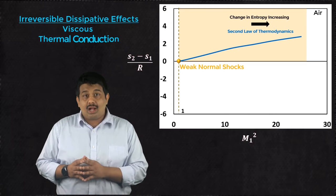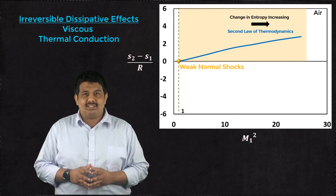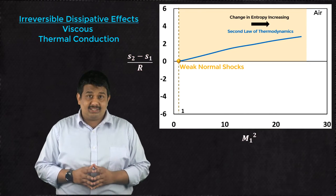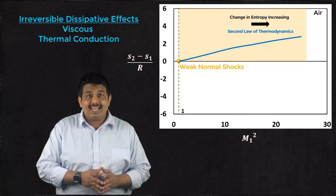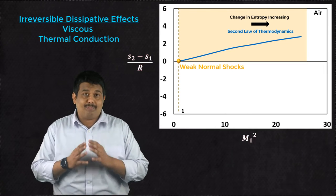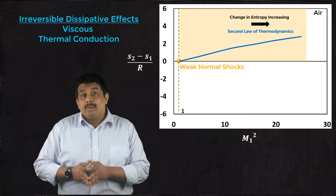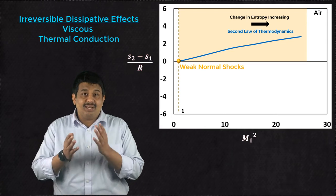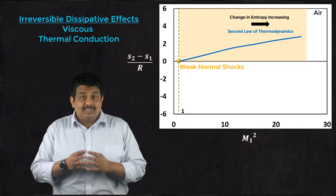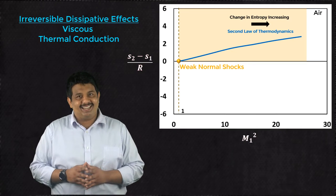Recall that shock occurs over a small distance and across this distance, the effects of fluid viscosity and thermal conduction are important. Because of these irreversible dissipative phenomena, the entropy across a normal shock always increases.